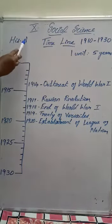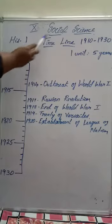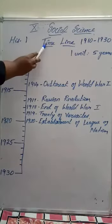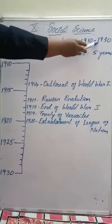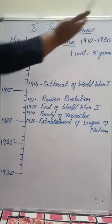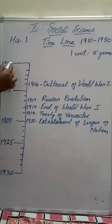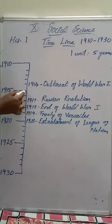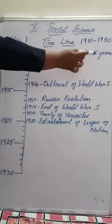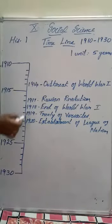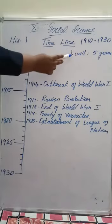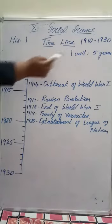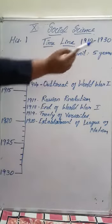In your first lesson, that is history 1, they have given: draw a timeline for the year 1910 to 1930. Here I have taken one unit as 5 years. You can take it for 10 years also, but here to make it easy I have taken one unit for 5 years.